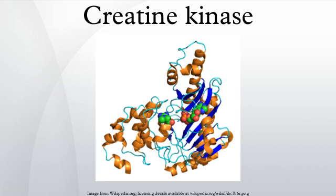The mitochondrial creatine kinase is present in the mitochondrial intermembrane space, where it produces phosphocreatine from mitochondrially generated ATP and creatine imported from the cytosol. Apart from the two mitochondrial CK isoenzyme forms — ubiquitous MTCK and sarcomeric MTCK — there are three cytosolic CK isoforms: MCK is expressed in sarcomeric muscle (skeletal and cardiac), MBCK is expressed in cardiac muscle, and BBCK is expressed in smooth muscle and most non-muscle tissues.